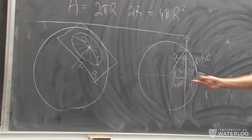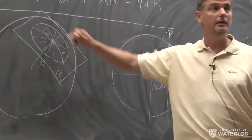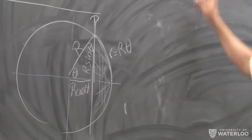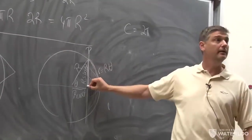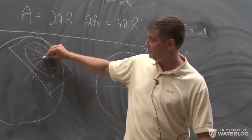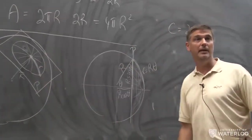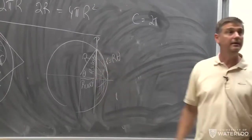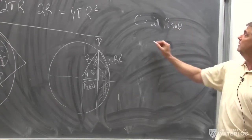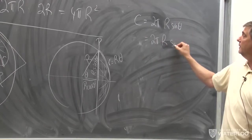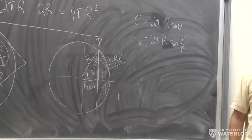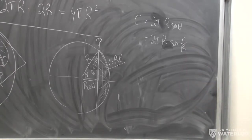That distance on the picture is R·sin(θ), and R·cos(θ) in the other direction. The circumference of that circle on the sphere is the same as the circumference of an ordinary flat circle — 2π times its flat radius, which is R·sin(θ). So the circumference of the spherical circle is 2πR·sin(θ), or equivalently 2πR·sin(r/R), since θ = r/R.